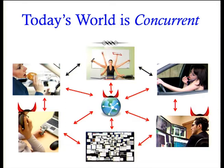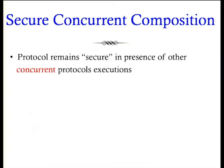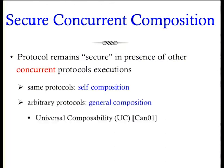What we really want is security under concurrent composition — when we run protocols, even concurrently with other protocols, they remain secure. When we talk about security of multiple executions of the same protocol, we say security under concurrent self-composition. When we talk about security of arbitrary protocols being executed concurrently, we call it concurrent general composition. The UC framework of Canetti is a specific formulation for capturing security under concurrent general composition.